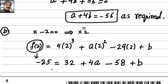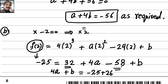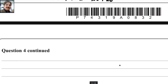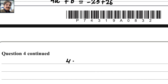Keeping 4a plus b on one side: 32 minus 58 is negative 26. Bringing negative 26 to the left side gives negative 25 plus 26 equals 1. So we get the second equation: 4a plus b equals 1.